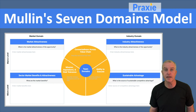Those are the seven domains. You put them all together as an integrated system, and they'll create competitive advantage and drive business growth for your organization. For more best practice templates and applications, visit Praxi.com.